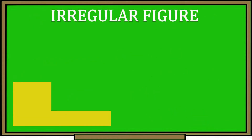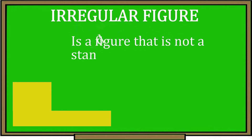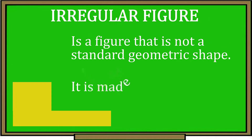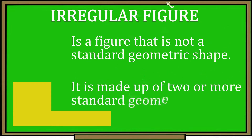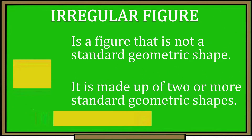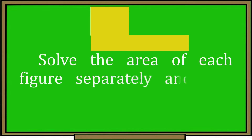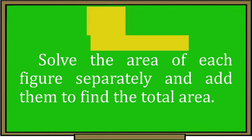What do you mean by an irregular figure? An irregular figure is a figure that is not a standard geometric shape — it is made up of two or more standard geometric shapes. Areas of irregular figures can be determined by dividing the figure into squares and rectangles. We solve the area of each figure separately and then add them to find the total area.